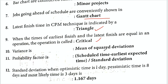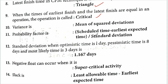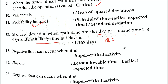Variance is the square of standard deviation. The probability factor is: scheduled time minus earliest expected time, divided by standard deviation. The standard deviation formula is: pessimistic time minus optimistic time, divided by 6. For example, if pessimistic time is 8 and optimistic time is 1: standard deviation = (8 − 1) / 6 = 7/6 = 1.167 days.